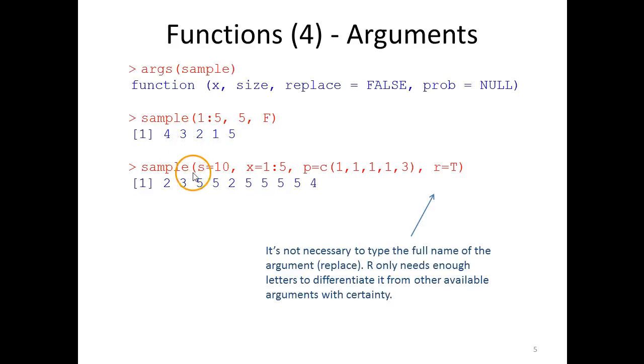If we for some obscure reason would like to start with for example the size and then provide the vector followed by the probabilities and then replace, then we would have to tell R the name of the argument because they are not in the expected order.